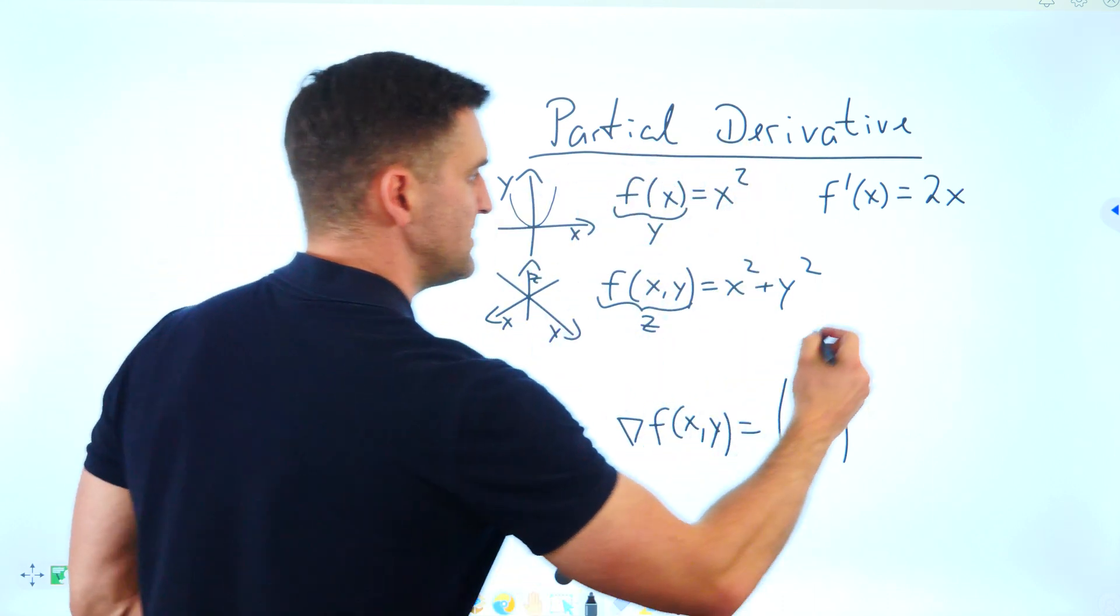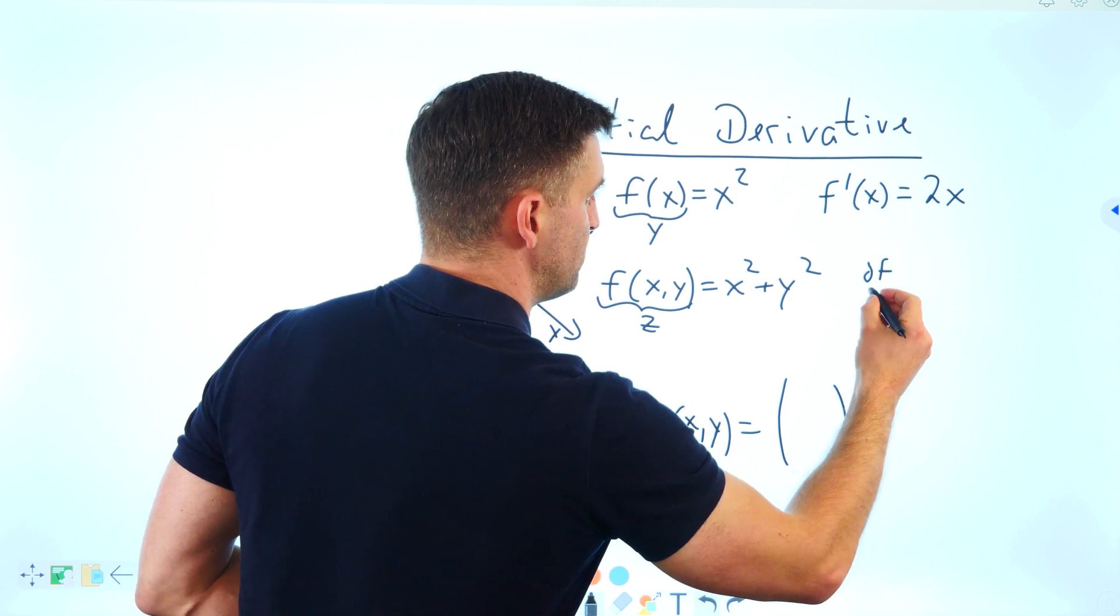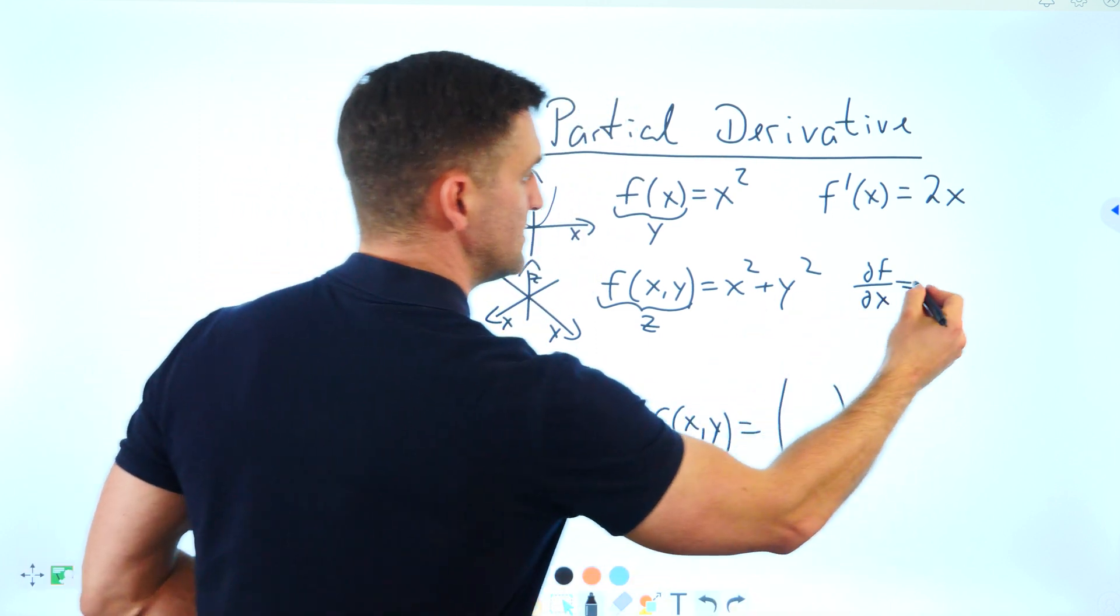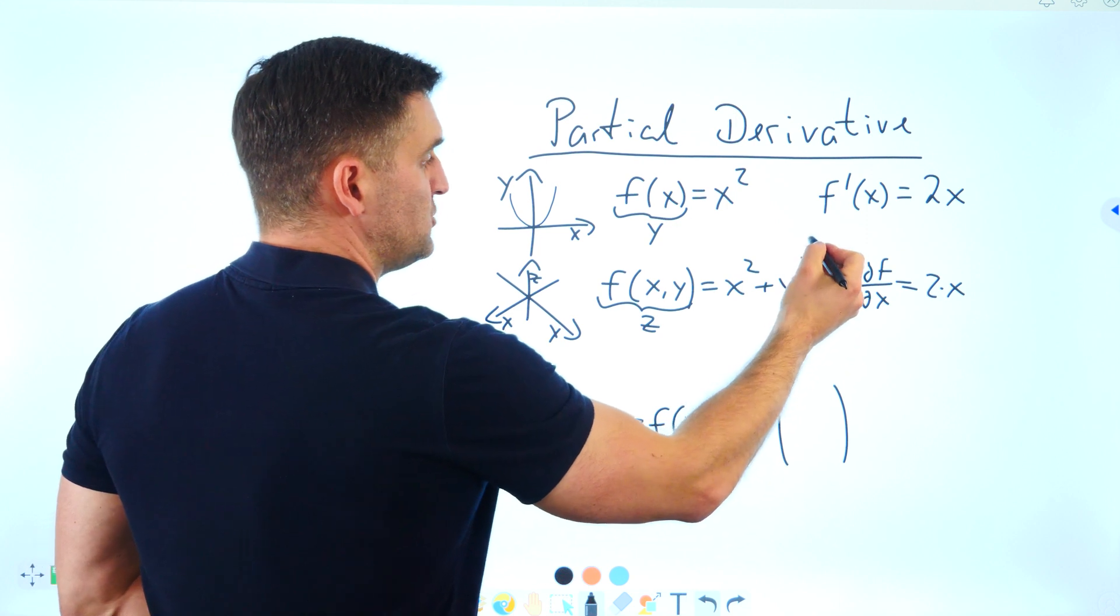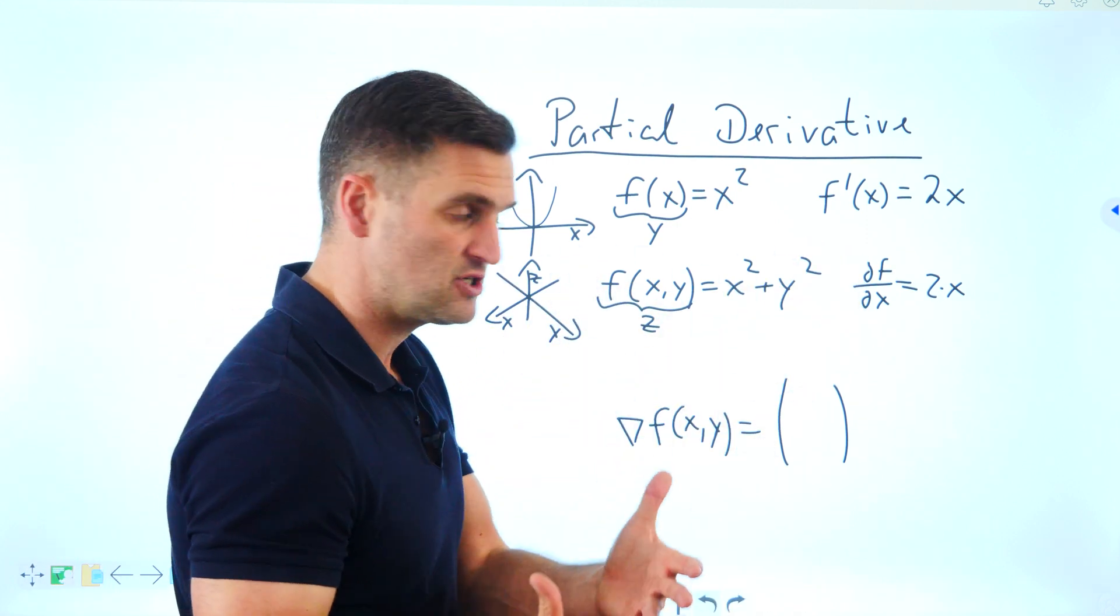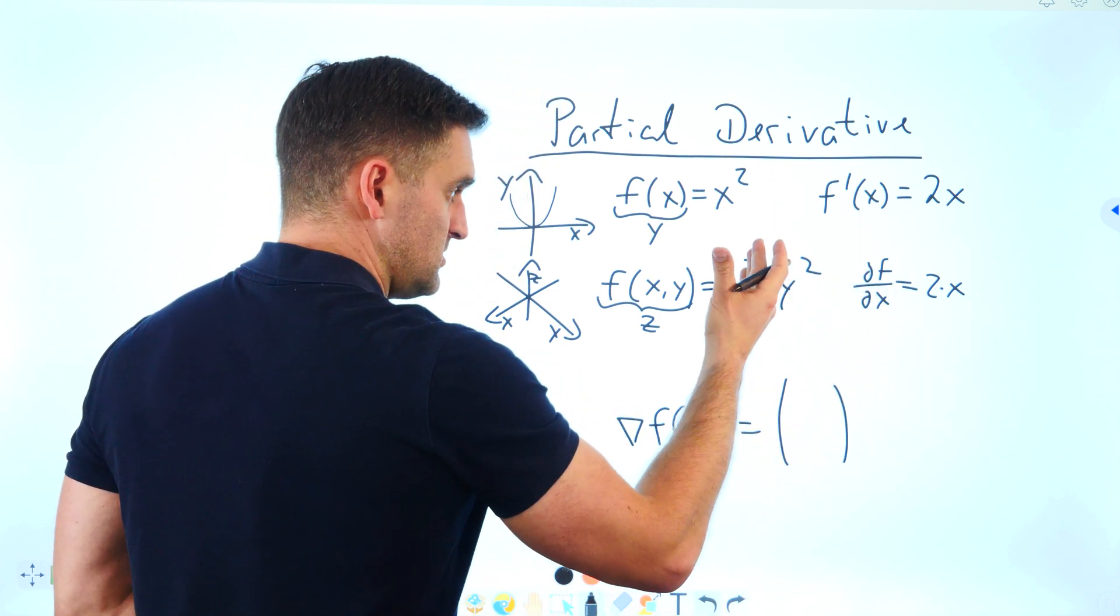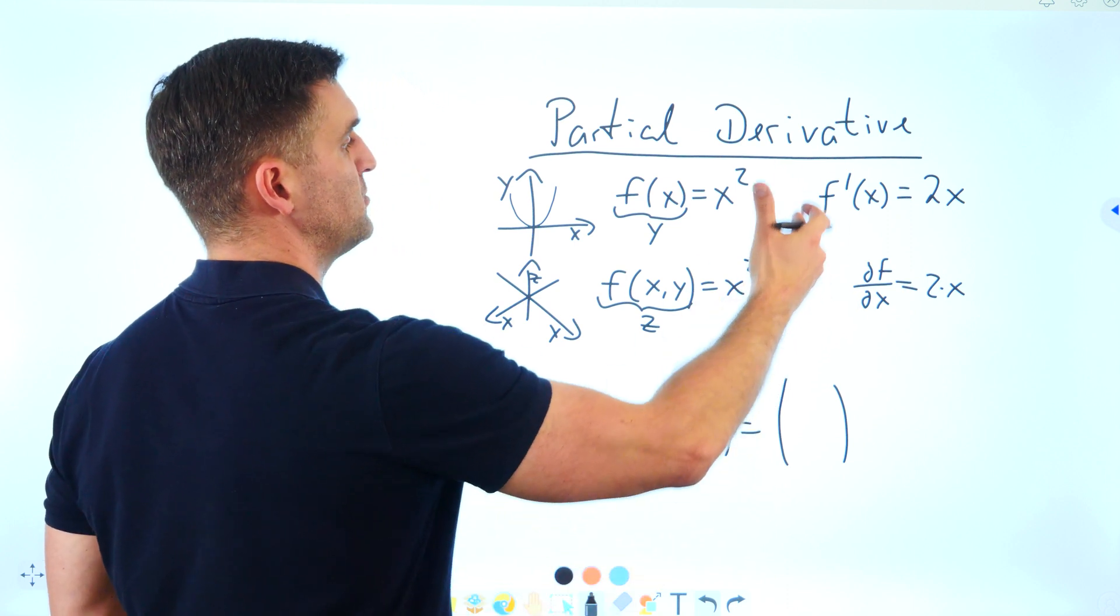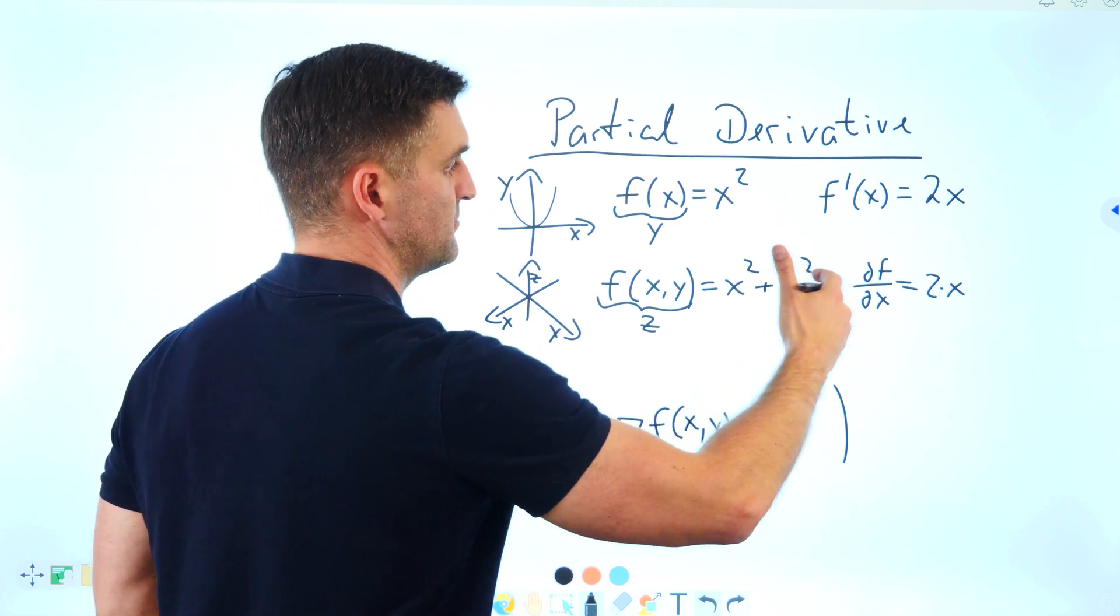In this case, the partial derivative of f with respect to x would be 2x. For y to the power 2, think of y as a number because it's the partial derivative with respect to x. A number to the power 2 is a number, plus a number. This derivative would be 0.